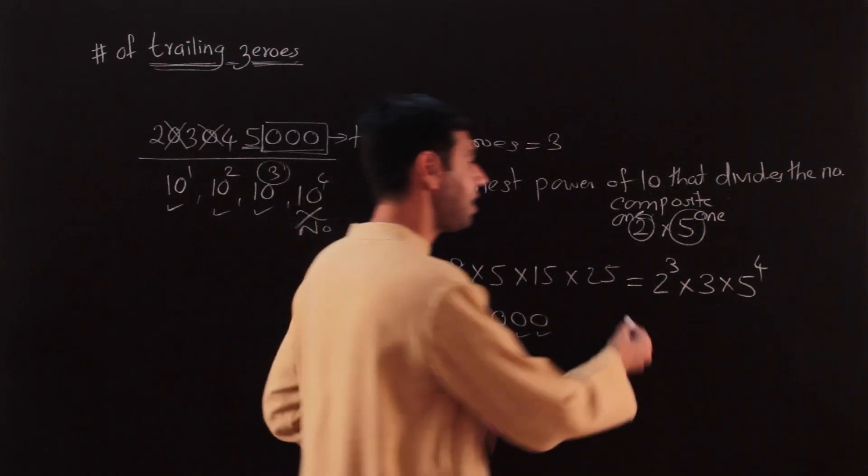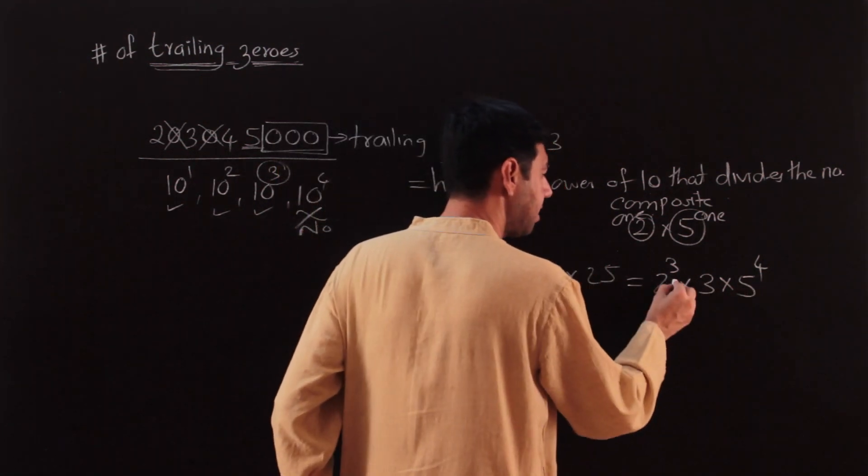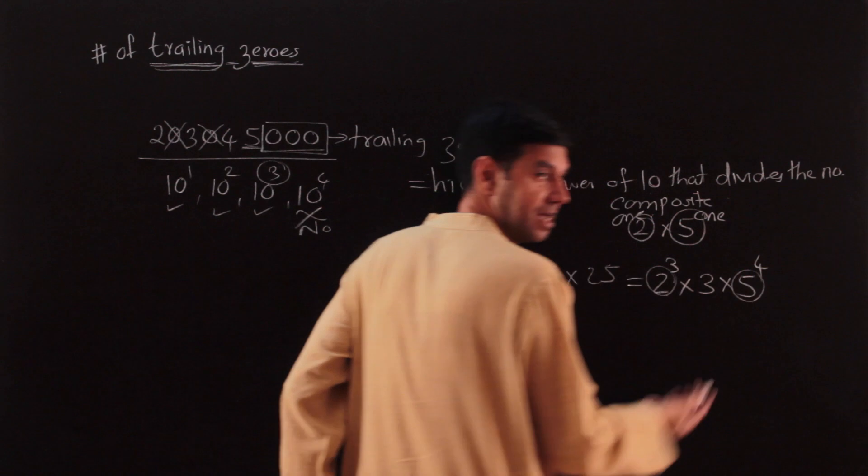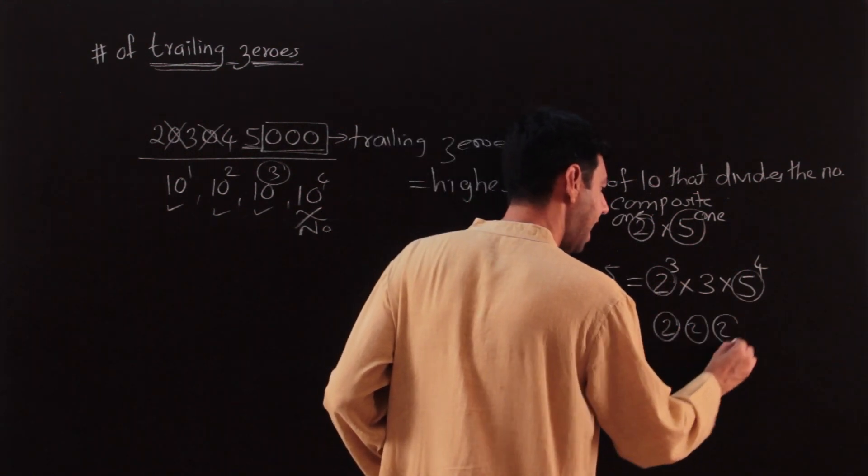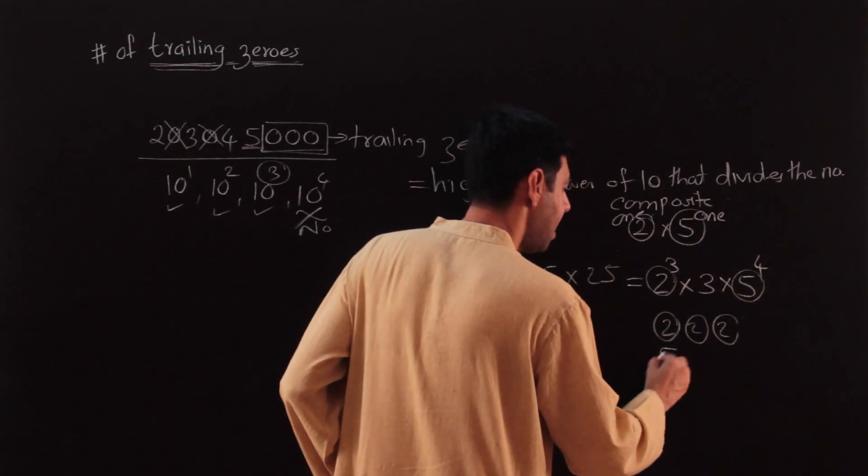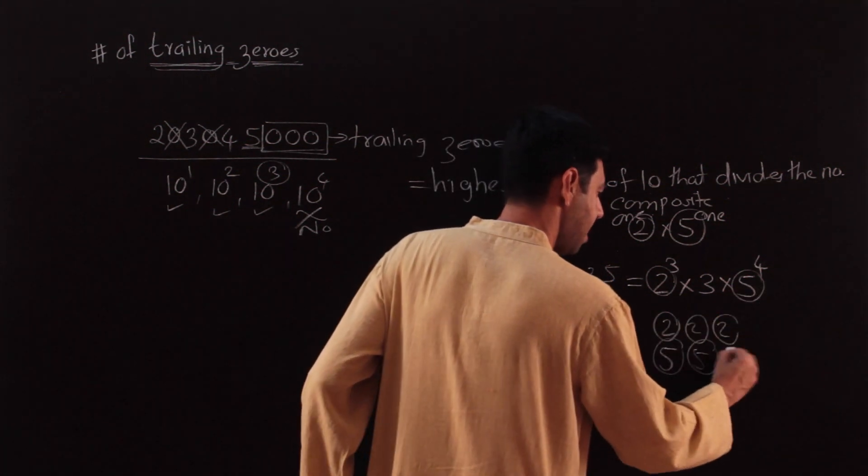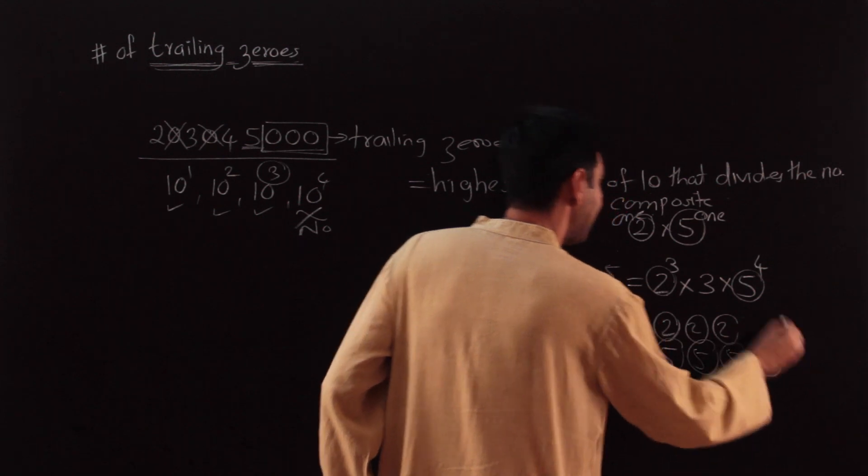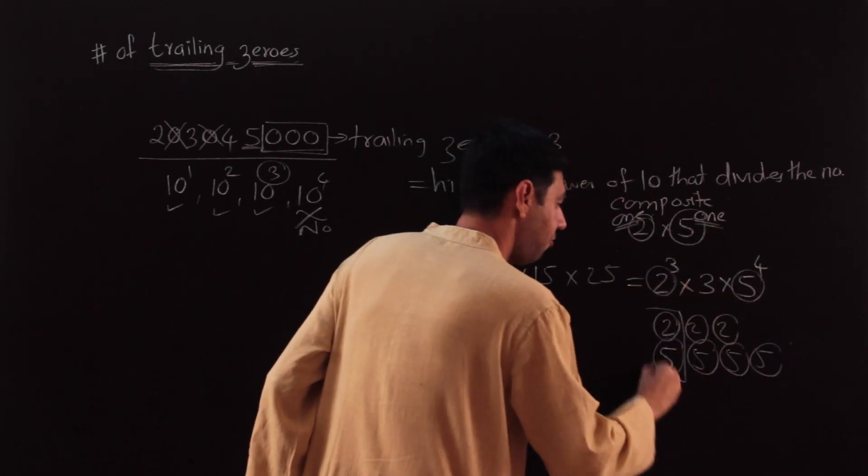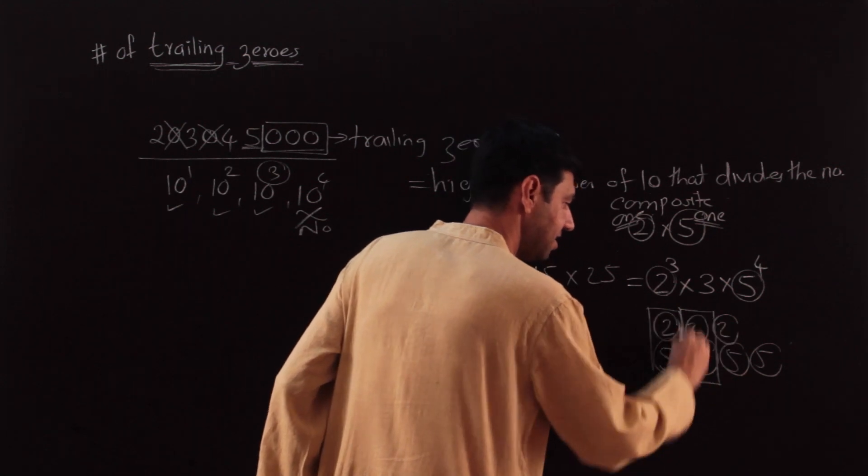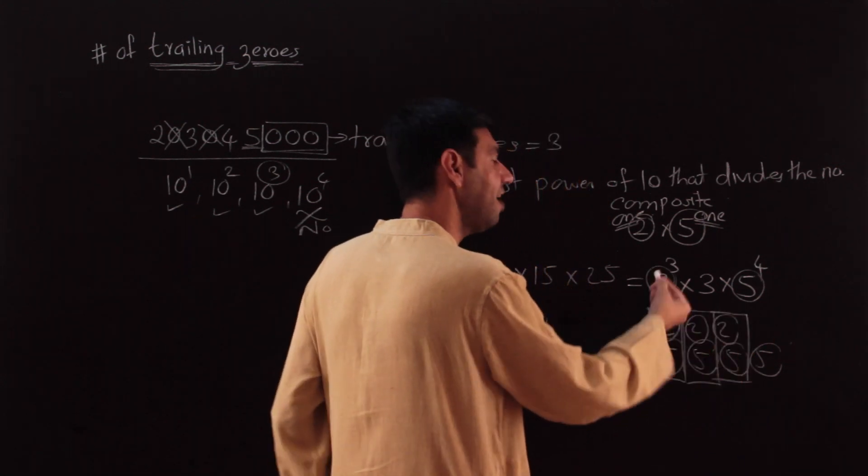If I look at the primes 2 and 5, I see there are 3 twos - one and another one and another one - and how many fives? There are 4 fives. I again point out the fact that 1 two with 1 five will form a zero, another zero, and another zero, and I have exhausted my twos.